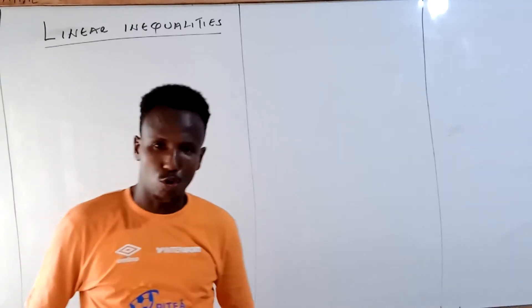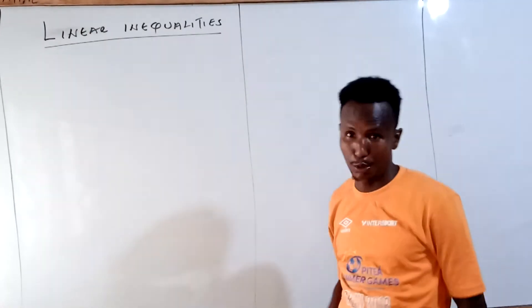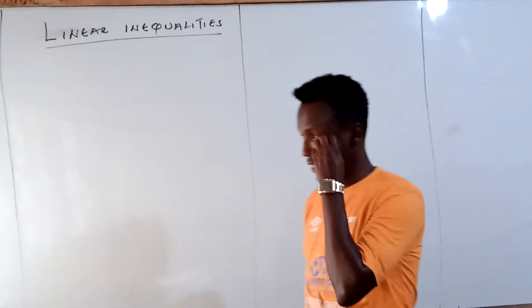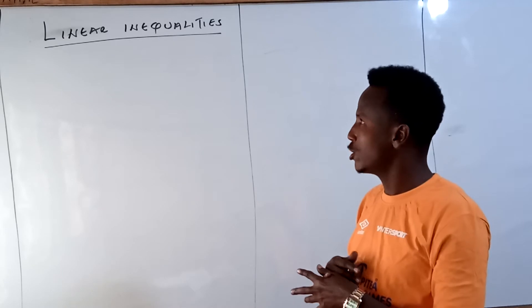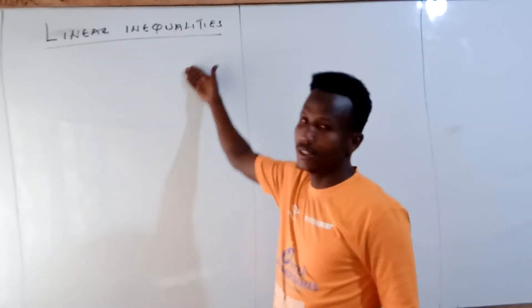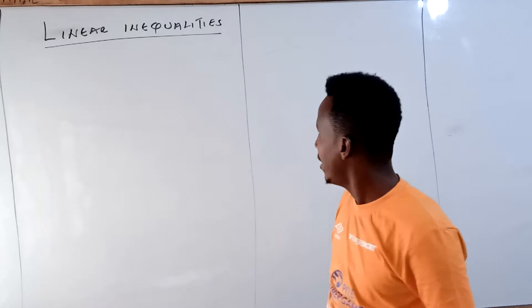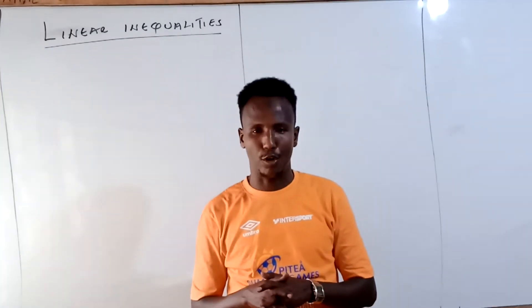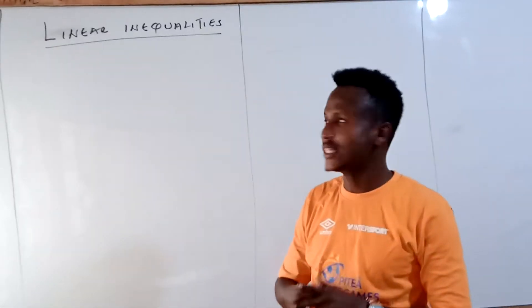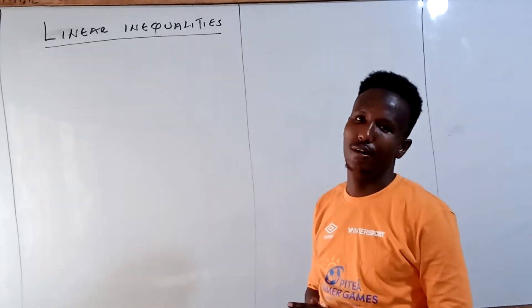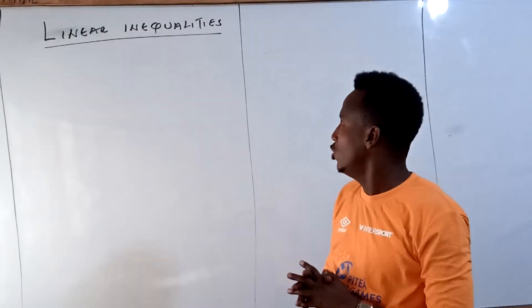Welcome back. This afternoon we'll be taking Form 2 mathematics. Our topic of discussion will be linear inequalities. This concept is chapter 716 of the key book of Form 2 mathematics. Linear inequalities is very important because in our current syllabus we have linear programming, and a student who doesn't have the concept of linear inequalities will not learn linear programming.